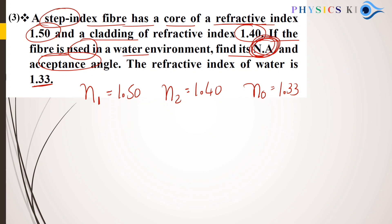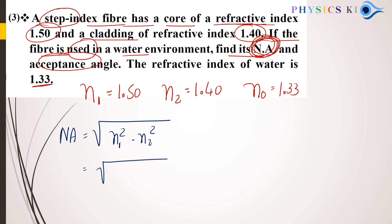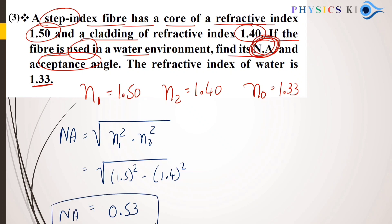The formula for numerical aperture is: NA = √(n1² − n2²). With n1 = 1.5 and n2 = 1.4: NA = √(1.5² − 1.4²). Using the calculator, you get NA = 0.53. The numerical aperture is done.